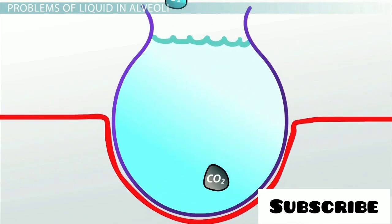Second, the oxygen and carbon dioxide would have further to travel across the water to reach the alveolar wall. This further slows the transfer of gases to and from the blood.